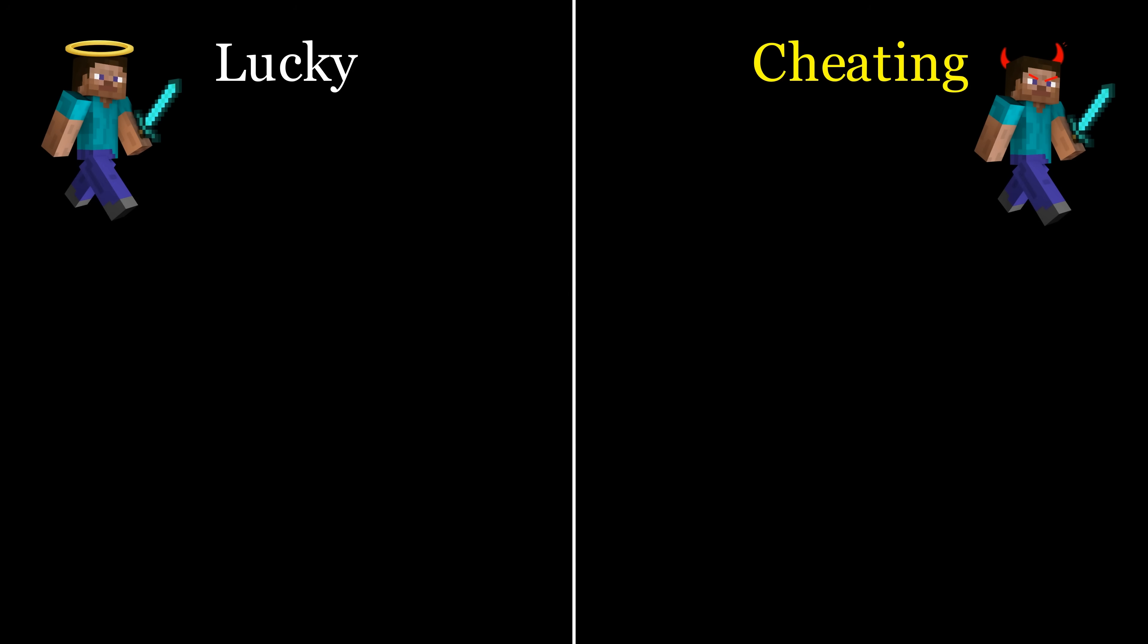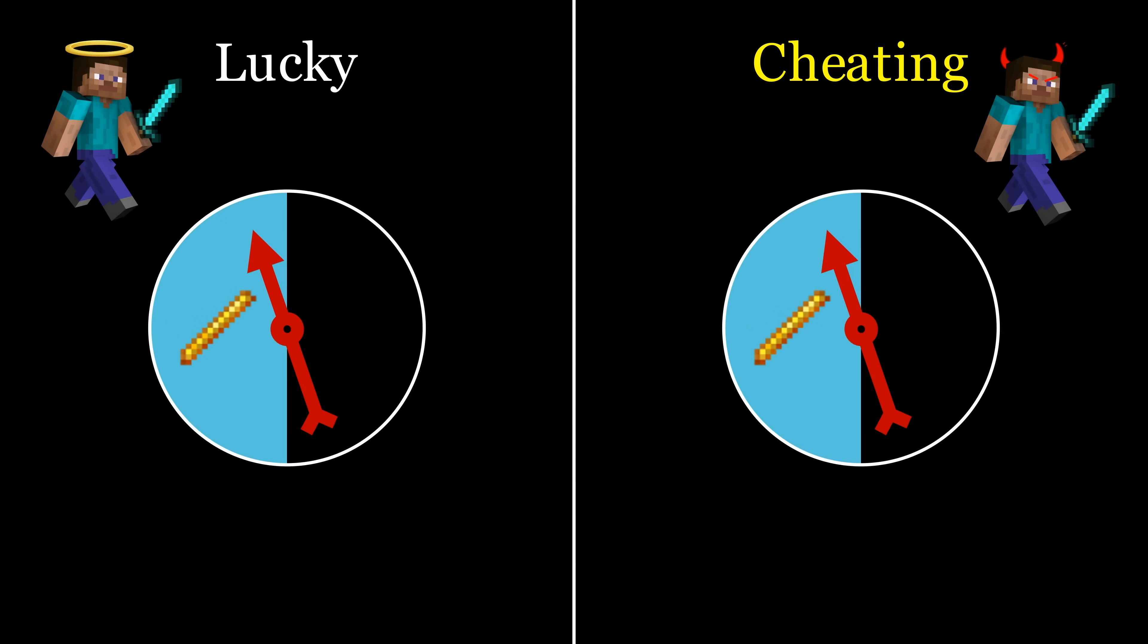In the code that ran on our friend's computer, there is a certain probability that a blaze drops a rod when killed. Normally, this probability is 50%, but we suspect that our friend may have raised it to cheat. Let's use the variable mu to represent this coded probability.